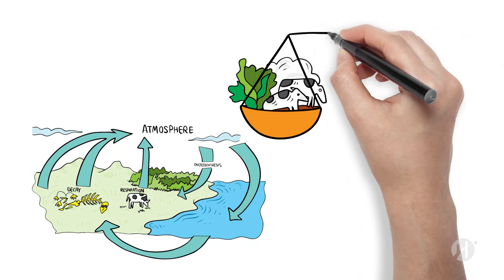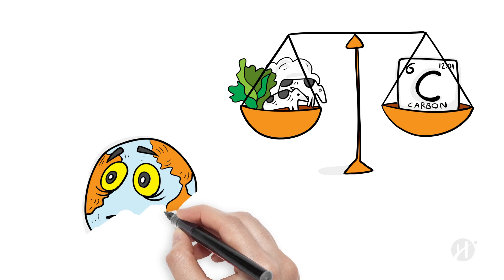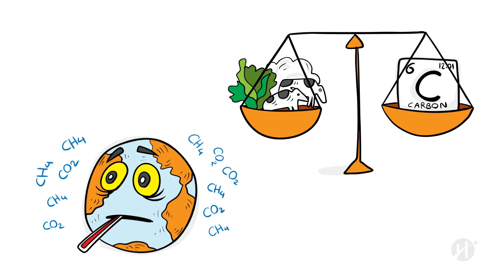In this cycle, the total amount of carbon that is cycling between living things in the atmosphere remains the same. Alright, so if the Earth's carbon levels naturally balance themselves, what is causing the buildup of carbon gases that is raising the Earth's temperature?